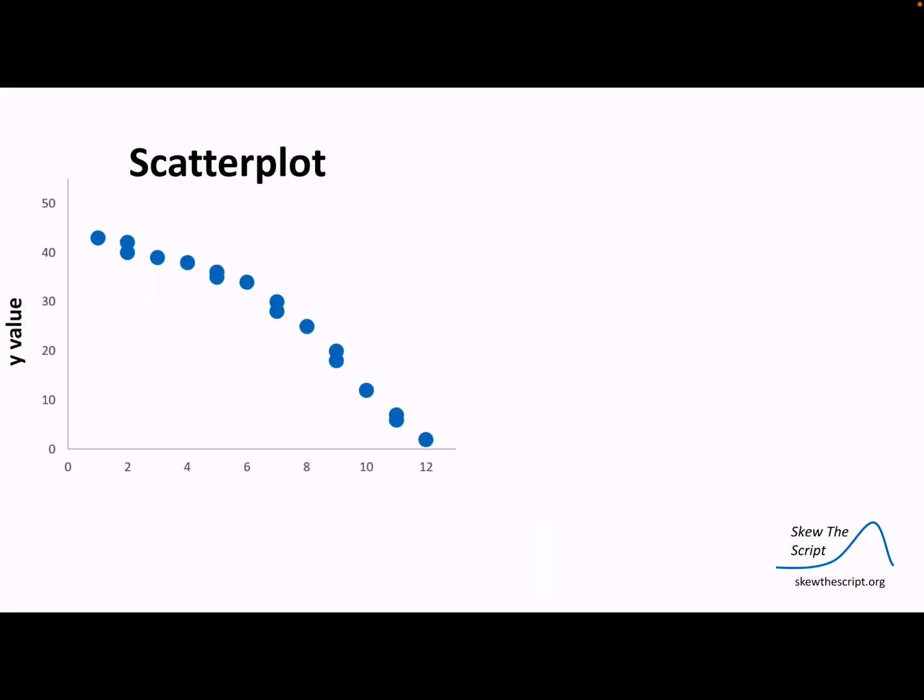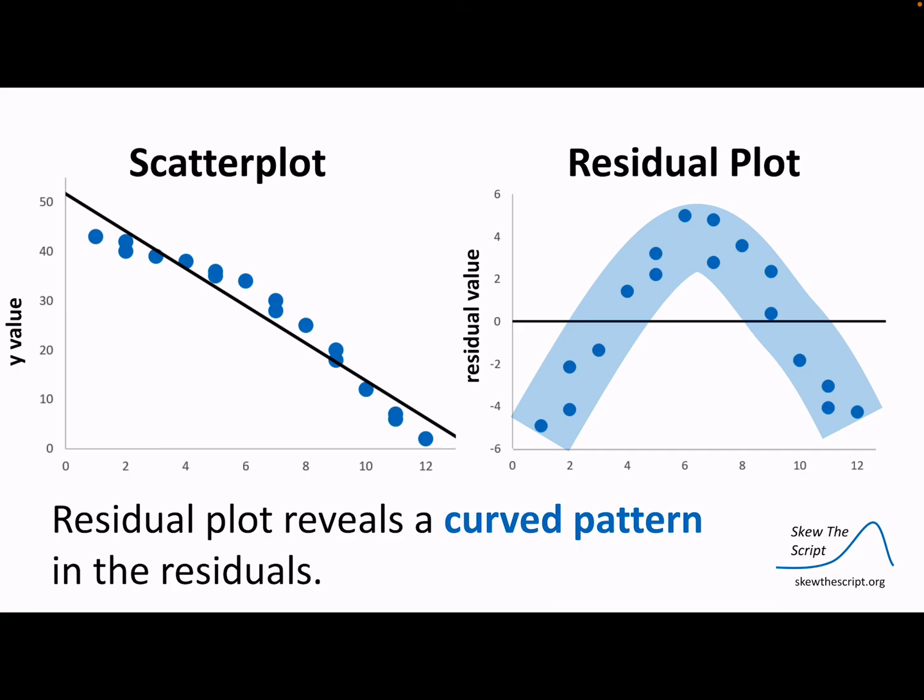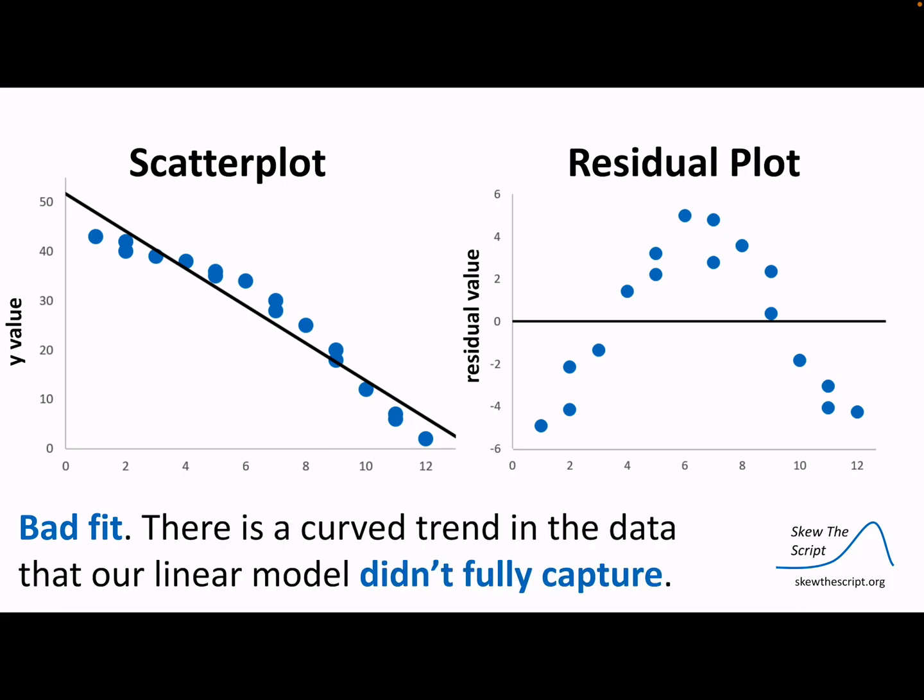However, let's say we have something that looks like this. You might notice it doesn't quite look linear. But if we do a linear regression, we can do our residual plot, and we find that the residual plot has a pattern. And so this one is a bad fit. We wouldn't use a linear equation for this graph because the residual plot follows a particular pattern. There is a curve trend in the data that our linear model didn't fully capture. That's a great way to say it.